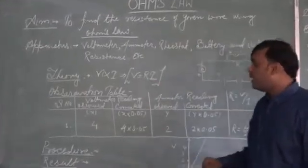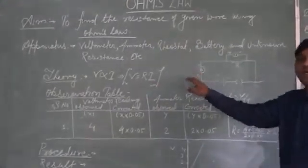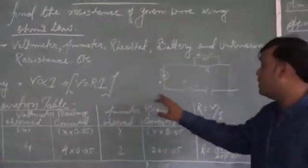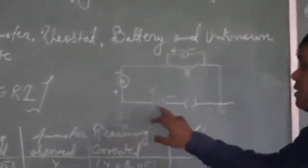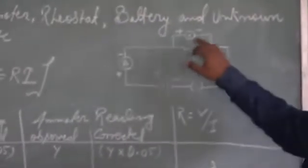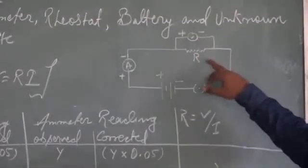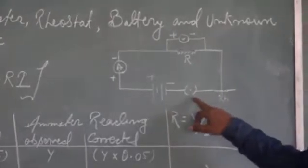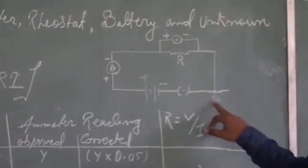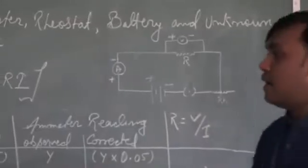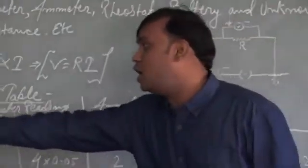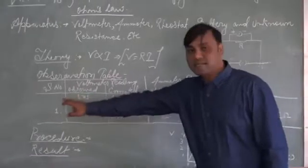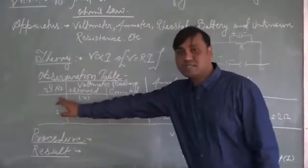Now we'll come to the circuit diagram. Here we have a battery, ammeter, voltmeter, unknown resistance, key, and the rheostat. After drawing the circuit diagram, we'll set up our observation table.